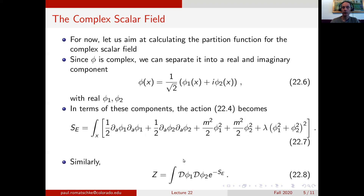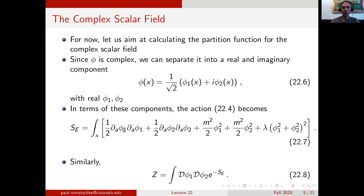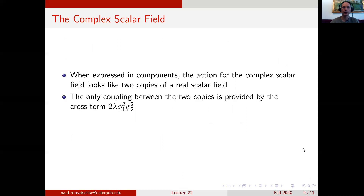The partition function in this case is given as the path integral over phi 1 and phi 2 of e to the minus the Euclidean action specified in equation 22.7. When we express it in components, the action for the complex scalar field looks very much like two copies of the real scalar field. We have a kinetic term and a mass term for each component, plus a term that couples phi 1 to phi 2 through the interaction. Besides this cross term, which is 2 lambda phi 1 squared phi 2 squared, we just have two identical copies of a scalar field theory.